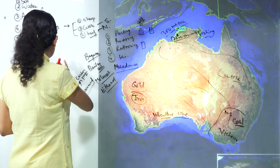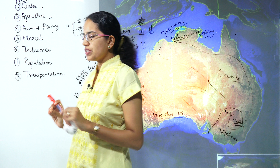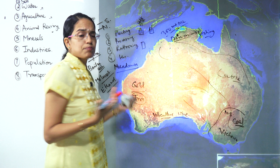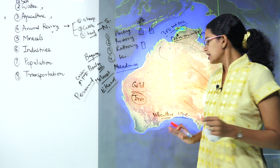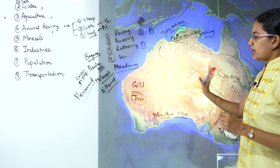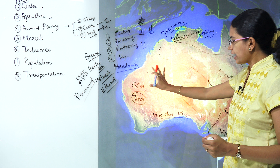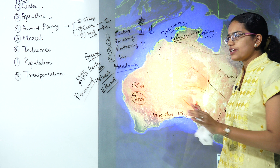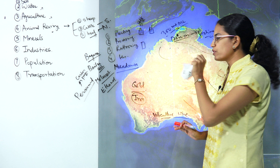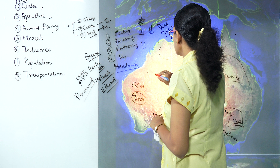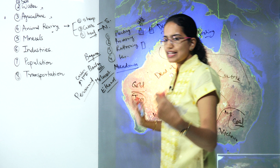Coming on to population: Australia on an average is a sparsely populated region. The population density is very low, around two persons per square kilometer, with an approximate population of around 20 million, of which 85 percent is mainly confined to bigger cities like Sydney, Perth, Canberra and Melbourne. Most of the desert region, which encompasses the western and central part of Australia, is predominantly devoid of human habitation and is therefore known as the dead heart of Australia.